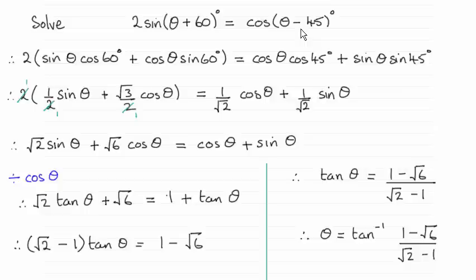Expand out the brackets using the addition formulae, aim to divide through by cos θ so you get an equation in terms of tan θ, and then you should be able to rearrange it and solve for θ.